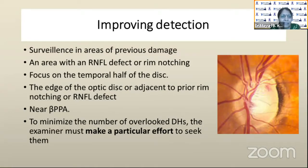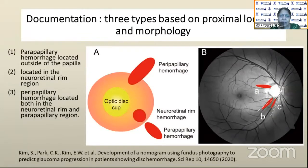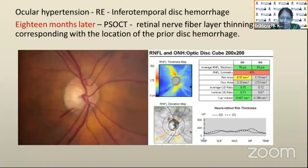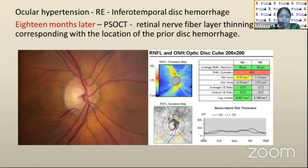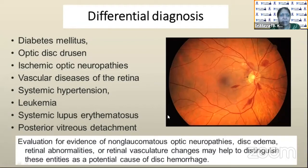To improve detection, increase surveillance and look at areas likely to be affected — near RNFL defects, near rim notching, on the temporal side, or near beta-zone peripapillary atrophy. Make a particular effort to seek these hemorrhages, and document them as peripapillary hemorrhage, neuroretinal rim hemorrhage, or parapapillary hemorrhage. In a classic case of an ocular hypertensive patient who developed disc hemorrhage, at the time there was no visual field defect or imaging defect, but after 18 months the OCT started showing a small area of RNFL loss in the area of the disc hemorrhage.